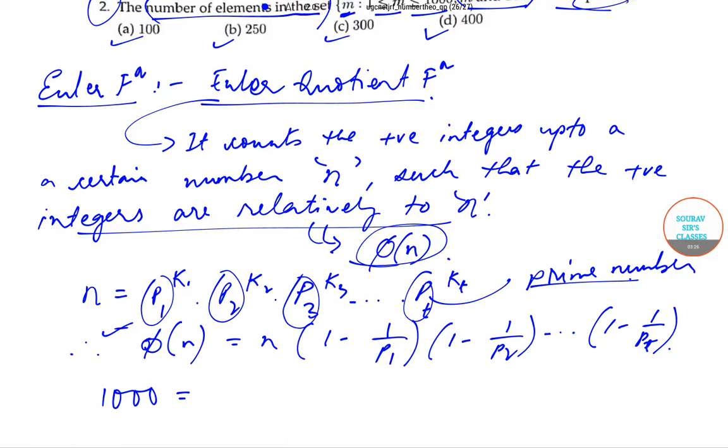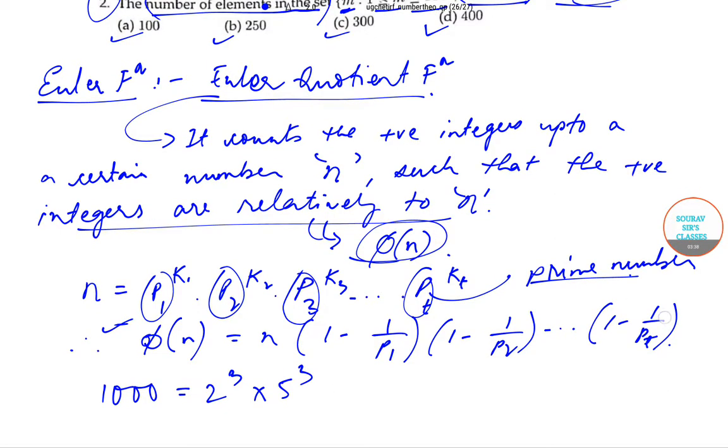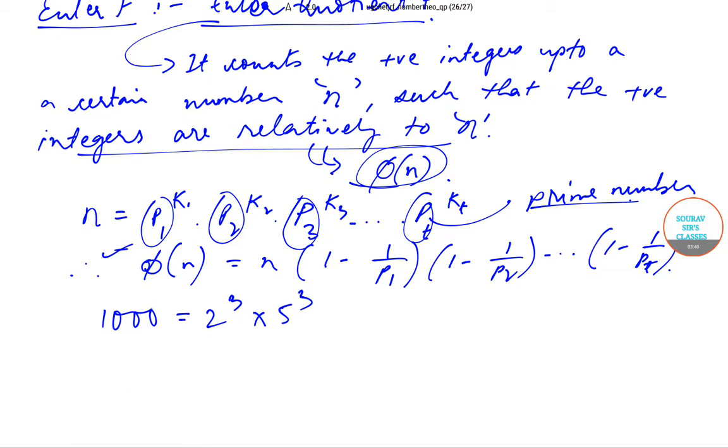Since we have to find out up till 1000, now 1000 can be written down as prime factors: 2^3 × 5^3. Basically this is 8 and this is 125, so 8 × 125, that is 2^3 × 5^3. So this is what we know.